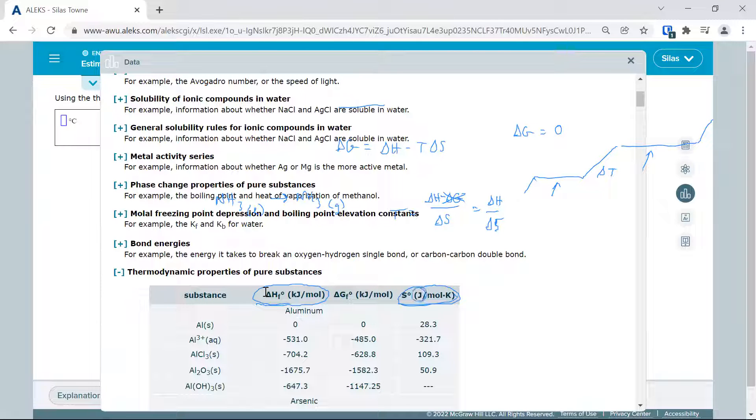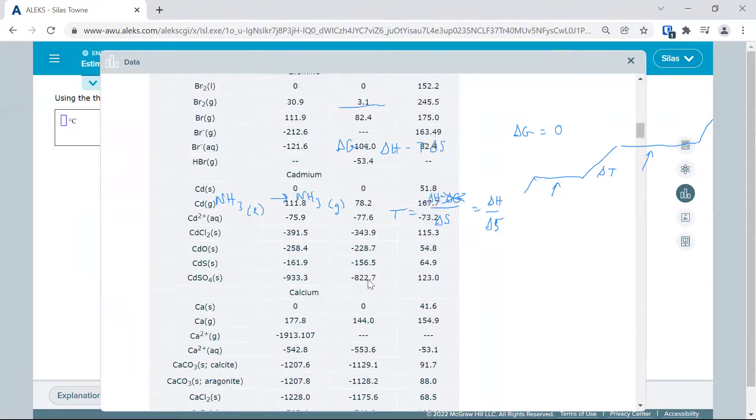Notice joules, kilojoules. We are going to have to adjust that because we cannot divide kilojoules up here by joules down here. That's going to cause problems. So we're going to have to adjust those to both be kilojoules or both joules. Then we're going to scroll and we're going to find NH3.